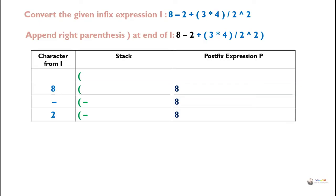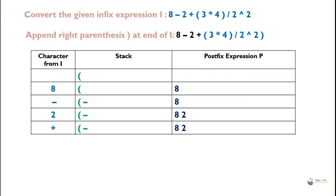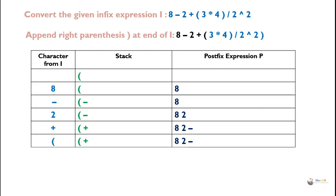Next we get 2, which is an operand, so it goes directly into the postfix expression. Then we get the operator plus. We check the stack — minus has the same precedence as plus, so minus is popped and added to the postfix expression. Plus is then pushed onto the stack. Next we get a left parenthesis, which is pushed directly onto the stack.